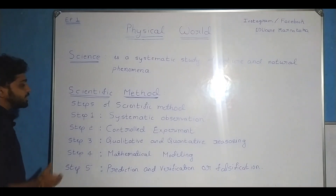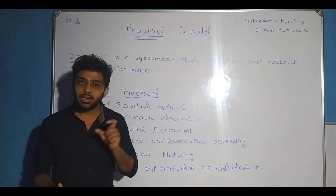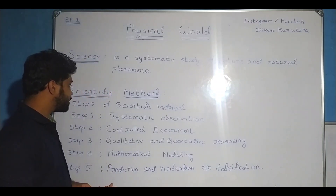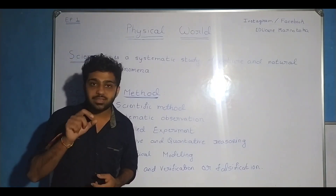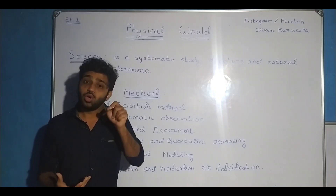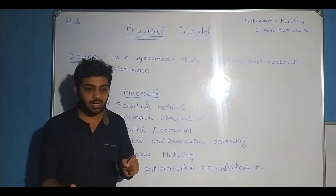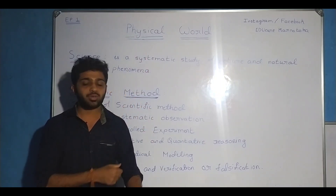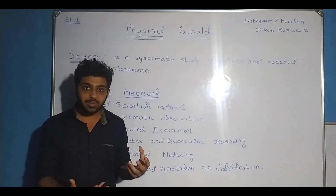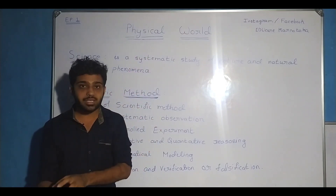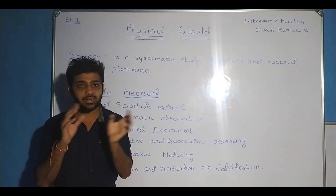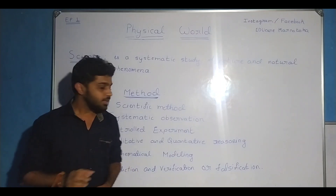The first step is systematic observation. In this step, we are observing natural phenomena in a systematic manner. For example, with Newton's law of gravitation — you observe an apple falling from a tree. You observe it and ask: why does the apple fall? That is a question. You observe it in a systematic way. That is systematic observation.